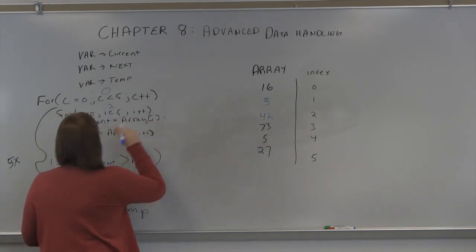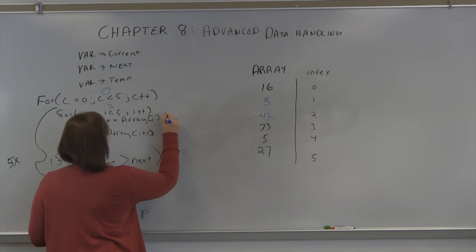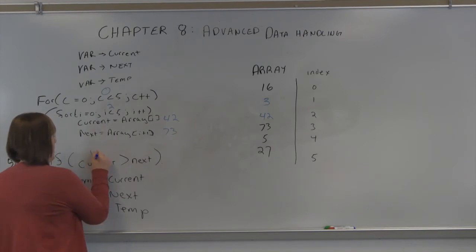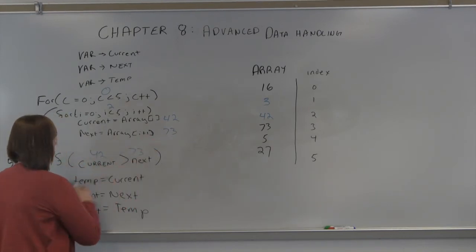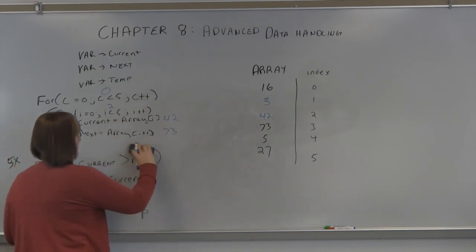So i equals, or current equals 42. Next equals 73. Is 42 greater than 73? No, they're in the right order. So we increment our loop.